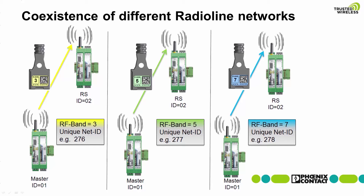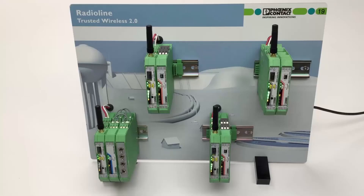The ConfStick serves as a network key and contains a unique network ID that cannot be assigned by software. For ConfStick configuration, you must configure all wireless modules in the network with the ConfStick. After configuration, it can be removed from the wireless module and safely stored. Each wireless network requires a different ConfStick.